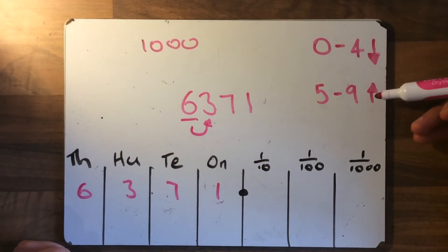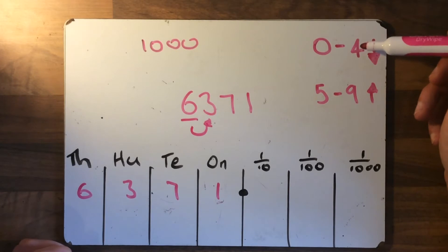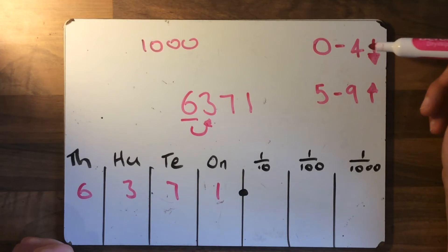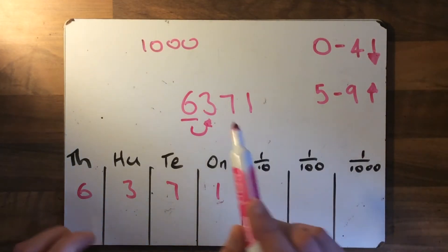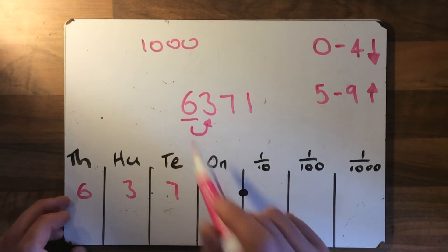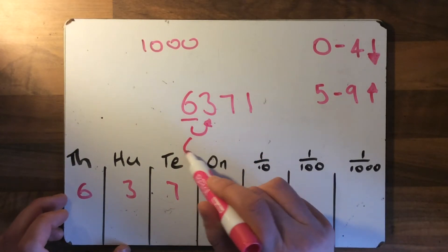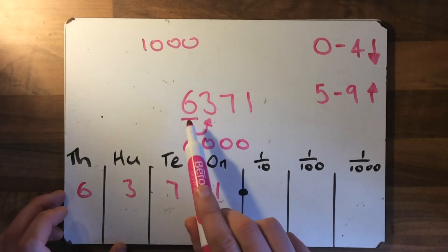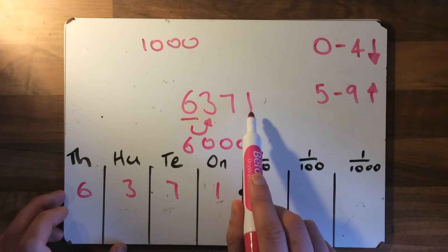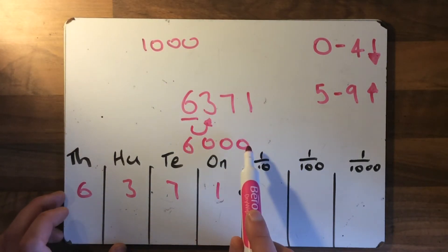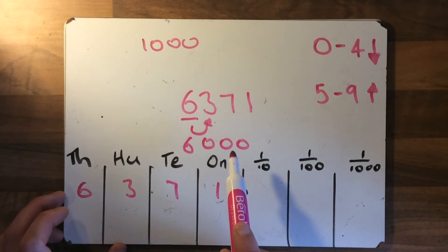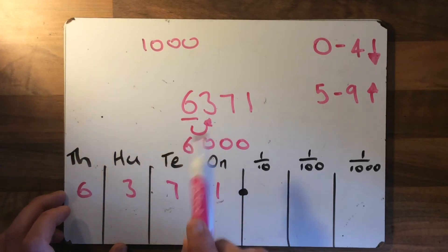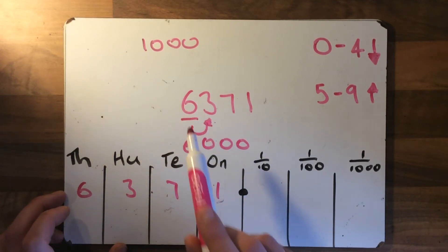Now we're looking — is it between zero and four, or is it between five and nine? It's between zero and four, so this number is going to be rounded down. So when a number gets rounded down, the underlined number — which is six in this case — stays the same. And then everything to the right becomes zeros. So six thousand, three hundred and seventy-one, rounded to the nearest thousand, is six thousand. It's been rounded down this time. The key to remember: if you're rounding up, the underlined number goes up one; if you're rounding down, the underlined number stays the same.